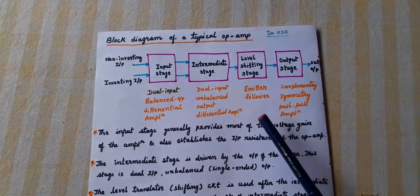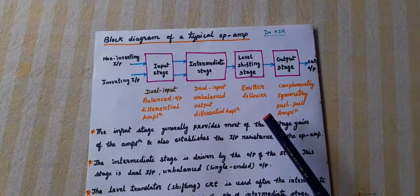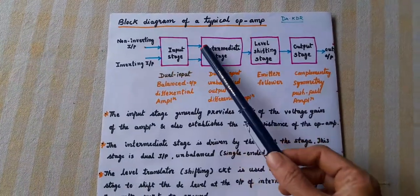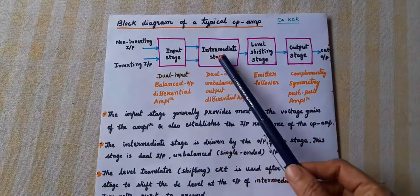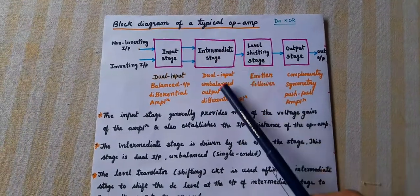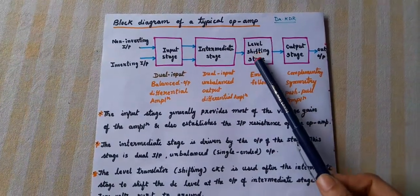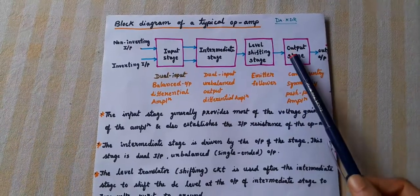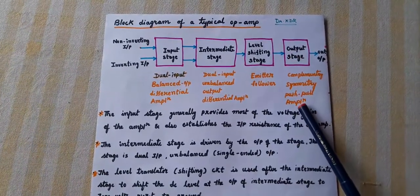The block diagram of the op-amp comprises 4 blocks: input stage — dual input, balanced output differential amplifier; intermediate stage — dual input, unbalanced output differential amplifier; level shifting stage — an emitter follower; and output stage — a complementary symmetry push-pull amplifier.